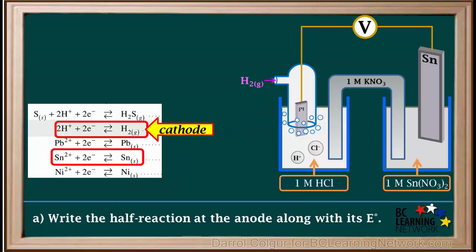We find the half reactions on the reduction table. The higher half reaction on the table, the hydrogen half cell, will act as the cathode, and the lower one, the tin half cell, will act as the anode.